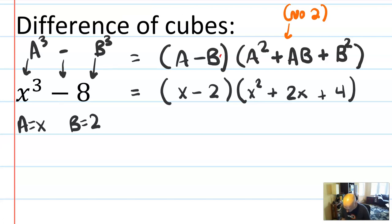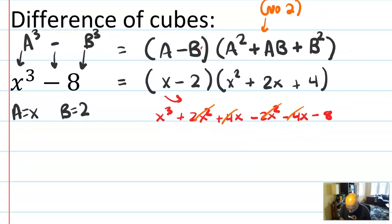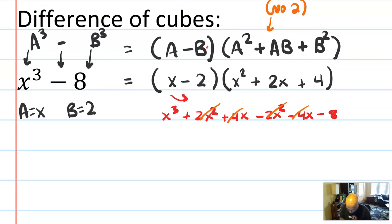Now I want to check this by multiplying it back out. So we'll do the x in. So we'll get x³ plus 2x² plus 4x, what I got, minus 2x² minus 4x and minus 8. I feel like I said a lot of things twice, so a lot of things cancel out. And we do get x³ minus 8. So this is the example of a difference of cubes factoring situation.